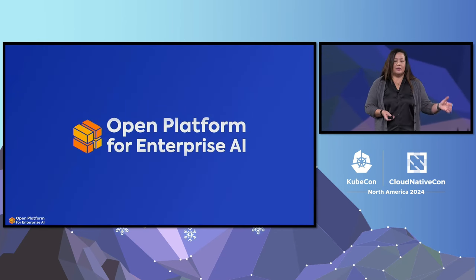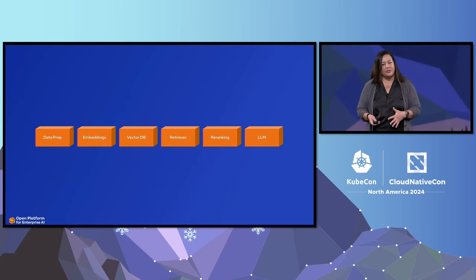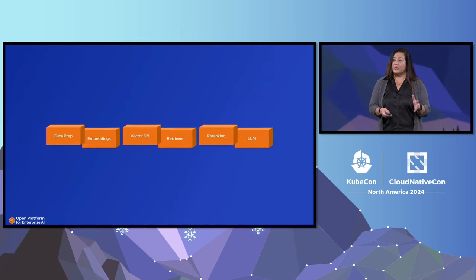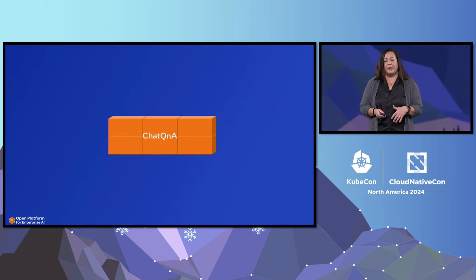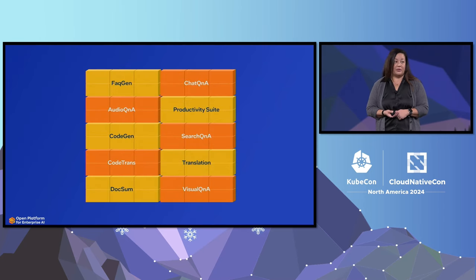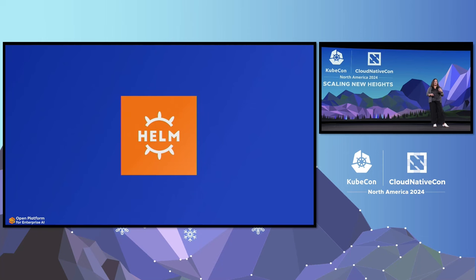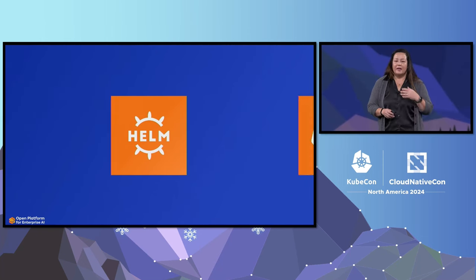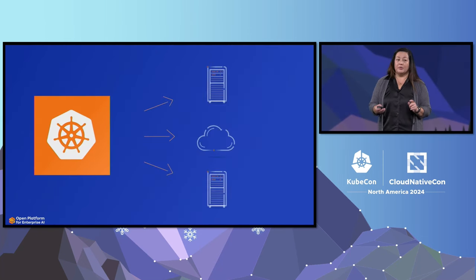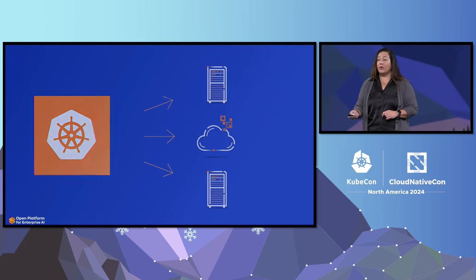Those microservices came together to form a chat Q&A containerized application, and Fippy and Goldie used that to build their application. Today, OPEA has chat Q&A plus 20 other recipes ready for use — there's audio Q&A, visual Q&A, code gen, and lots more on the roadmap. Each of these applications can generate a Helm chart that helps you orchestrate in Kubernetes. Applications deploy as production-ready containers for Kubernetes, and they can run on-prem, in the cloud, or on the edge.